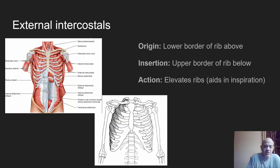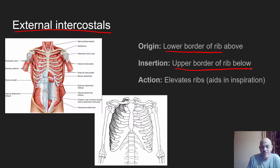The next muscle is found between the ribs, and there are two layers. The first is the external intercostals, which means between the ribs. The origin is going to be the lower margin or border of the rib above, and this muscle inserts on the upper margin of the rib below. The action is pulling upward on the ribs, which elevates them — this occurs during inspiration when you're breathing in, expanding the rib cage forward to allow air in.